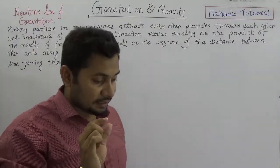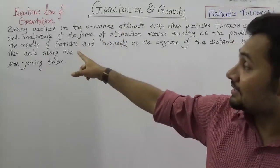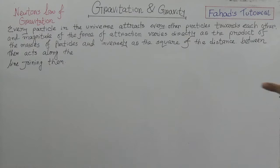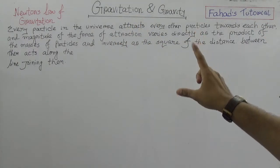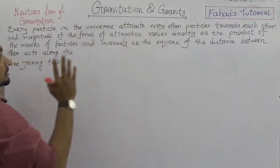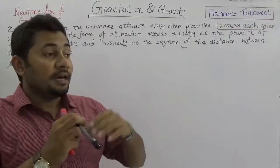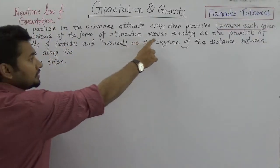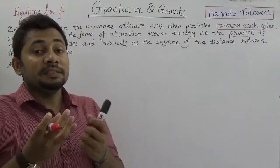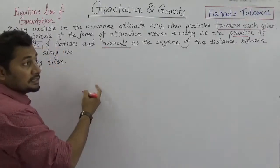Now we need to know what Newton's law of gravitation is. I have written it broadly: every particle in the universe attracts every other particle towards each other. This is very important. The magnitude of the force of attraction varies directly as the product of the masses of the particles. In this rule, three things are very important: towards each other, varies directly as the product of the masses, and each and every particle which has mass directly varies on the masses — that is the product of the masses.